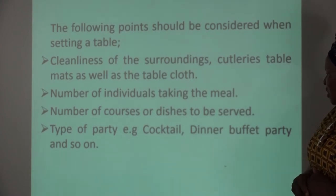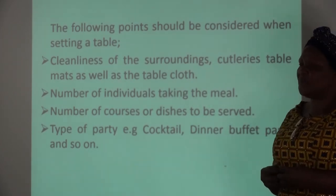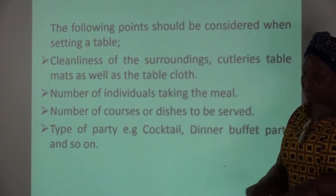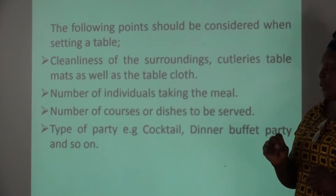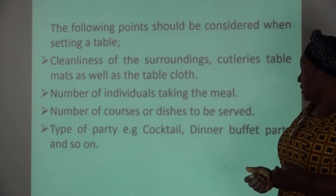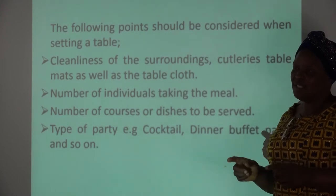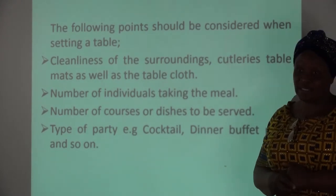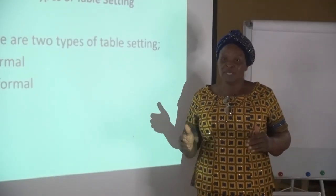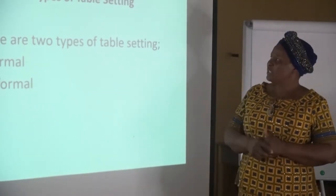The number of courses or dishes to be served must also be considered — is it a one-dish, a two-course, or a three-course meal? This will determine the kind of table you have to set. You also need to consider the type of party: is it a cocktail, dinner, or buffet party? All this must be considered, otherwise there will be confusion and no comfort.